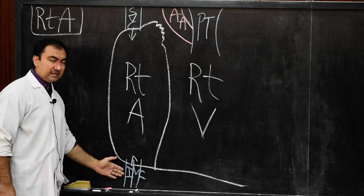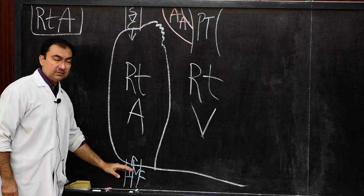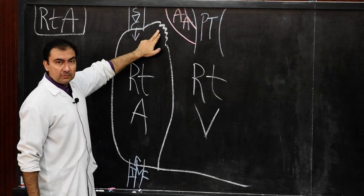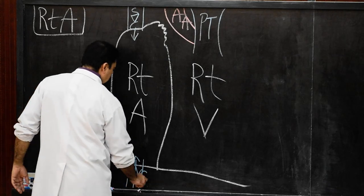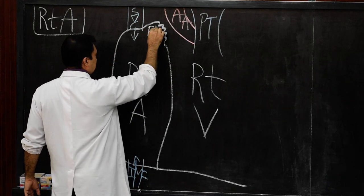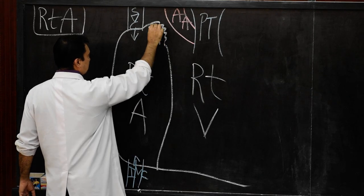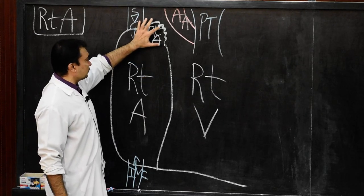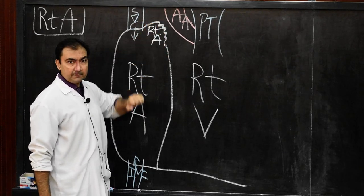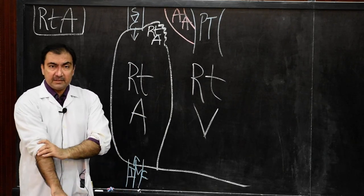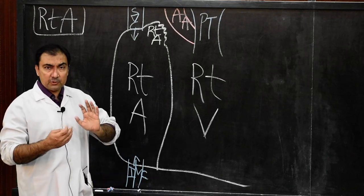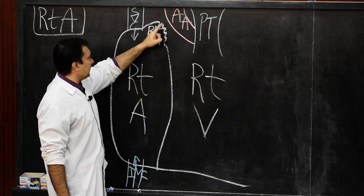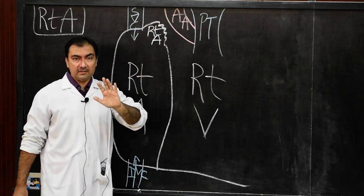This is the extension of the right atrium from the orifice of superior vena cava to the orifice of inferior vena cava. The first feature is a small conical muscular projection known as the right auricle. This right auricle projects from the anterior and superior surface of the right atrium towards the left side towards the ascending aorta.